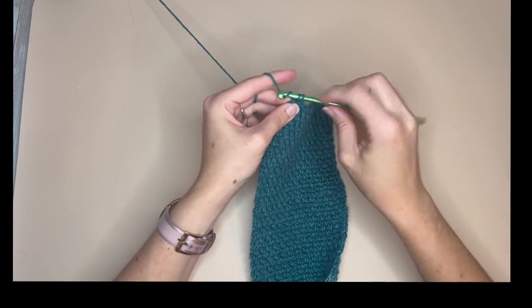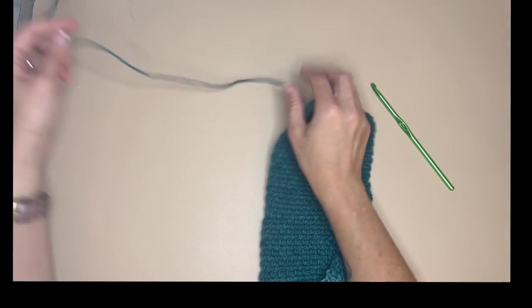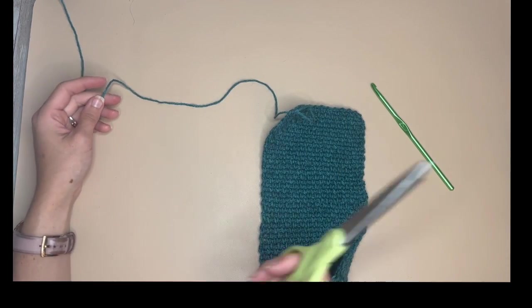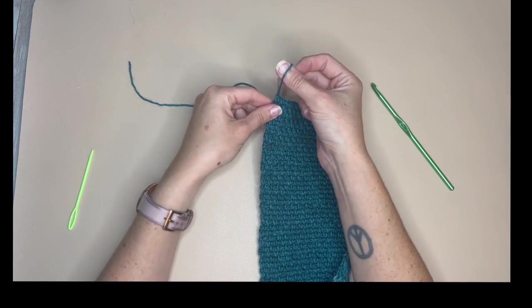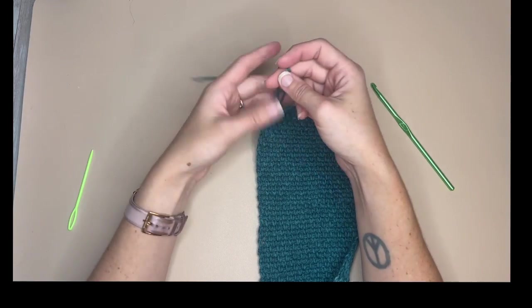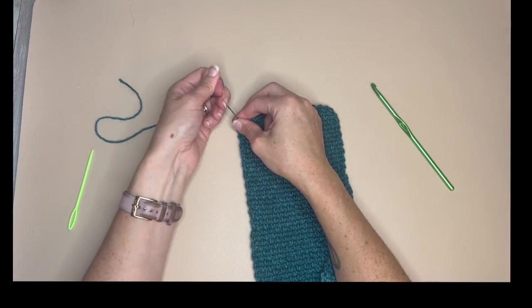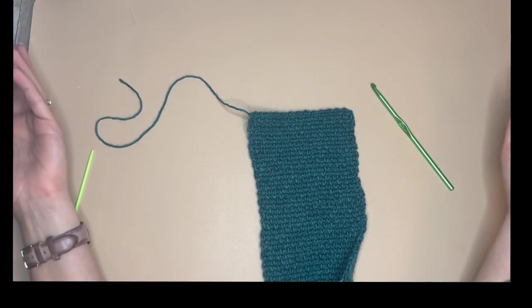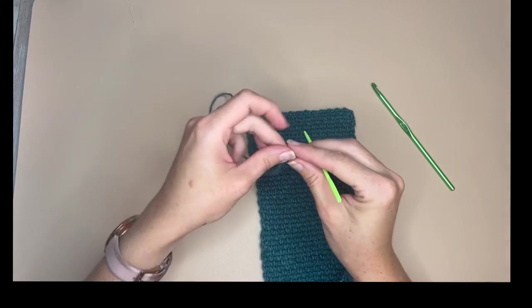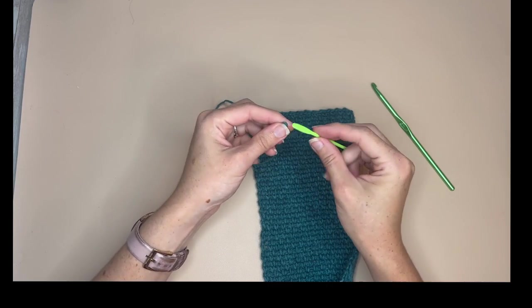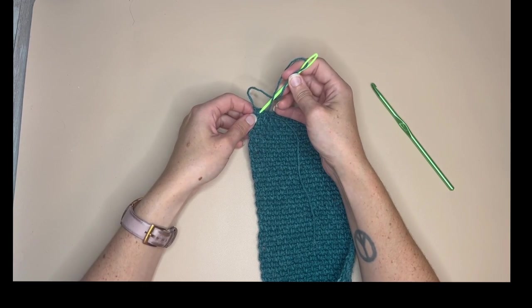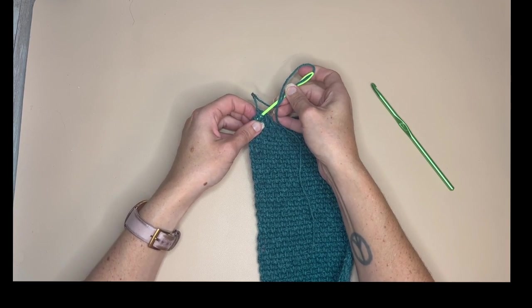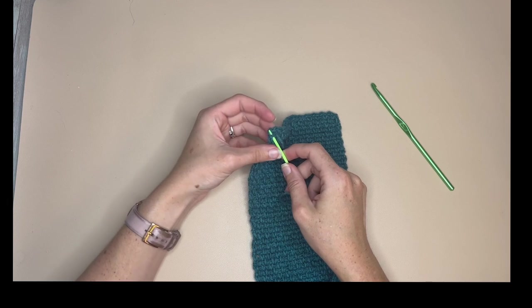All right so once you've gone to that last stitch we're going to pull the yarn out, grab scissors, cut, and then we're going to grab our tapestry needle, we're going to weave in that last end, tie off our loop, grab our tapestry needle, we are going to thread that through, and then from here we're just going to start weaving in our ends. And then of course going back through on the other side and weaving in our ends from the very beginning.